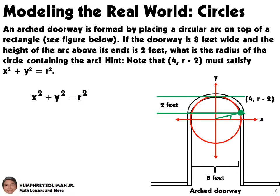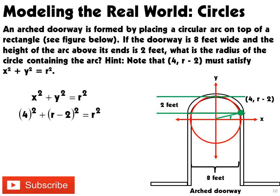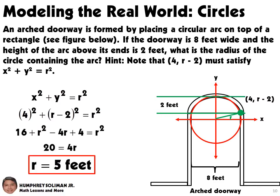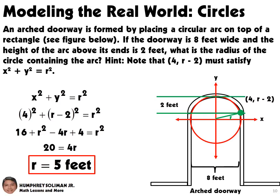Using the equation x² + y² = r², we will substitute 4 for x and r minus 2 for y, and then we solve for r. This will give us 16 + r² − 4r + 4 = r². Simplifying, this will give us the radius equal to 5 feet.